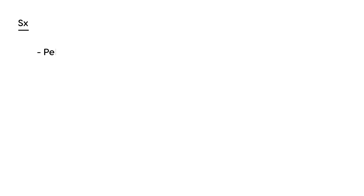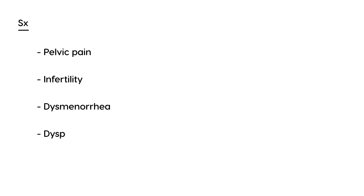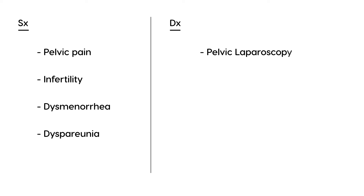The symptoms of endometriosis include pelvic pain, infertility, dysmenorrhea — pain during menstrual flow — and dyspareunia — pain during sexual intercourse. Together, these are fairly diagnostic of endometriosis. However, definitive diagnosis is made by laparoscopy, which allows visualization of ectopic tissue, followed by biopsy.